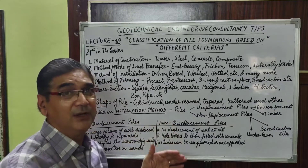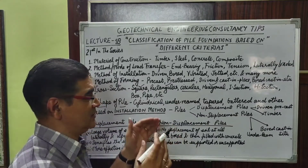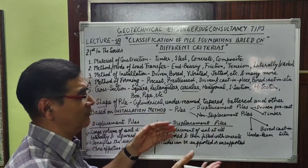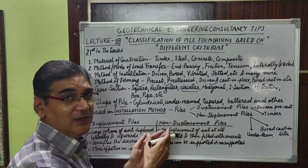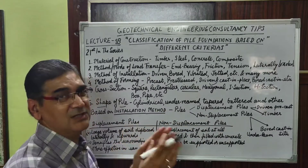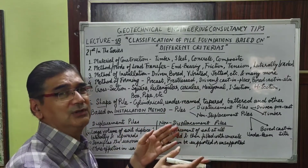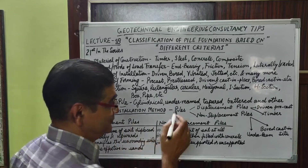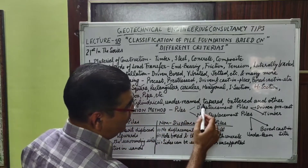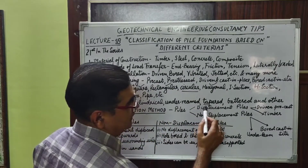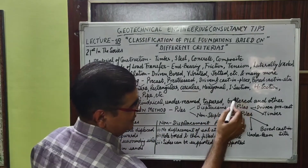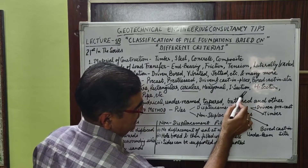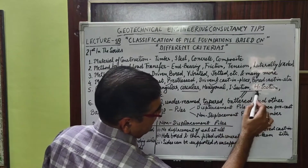There is also the under-reamed pile, which I have already discussed in my previous lectures referring to black cotton soil. Additionally, a pile may be tapered in shape, or it may be battered — meaning it is cast in situ at a certain angle to the horizontal.